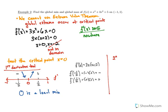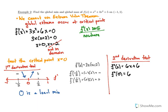We could also use the second derivative test — we don't need both, just one or the other. The second derivative is 6x + 6. Plugging in the critical point x = 0 gives 6, which is greater than 0, so x = 0 is a local min. Since the second derivative is positive, the function is concave up at that point, and if it's a critical point it has to be the bottom of a valley — decreasing then increasing.